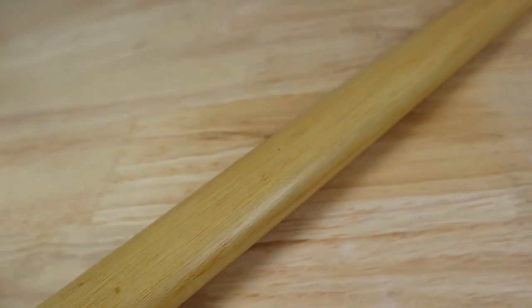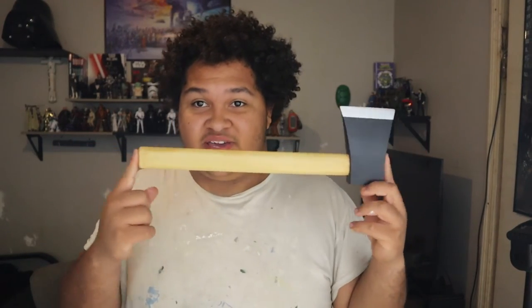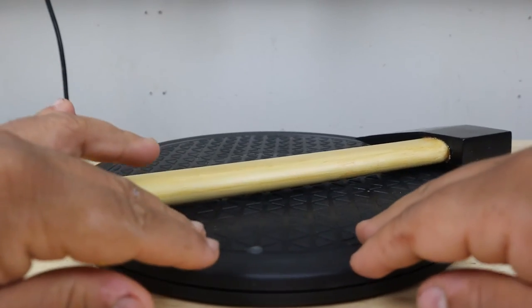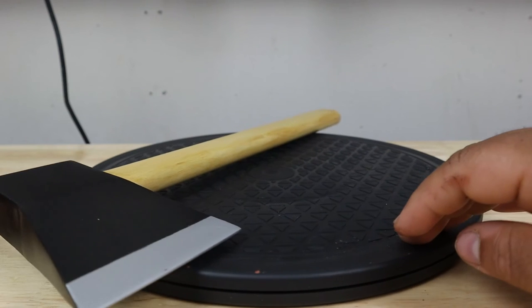All right, so that is Rick Grimes' hatchet from The Walking Dead. Another bucket list prop done. So thank you guys for watching, and I guess I'll just see you soon for the next one.